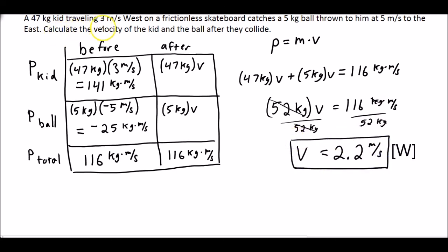So in the end, the velocity of the kid and the ball after they collide together is 2.2 meters per second.